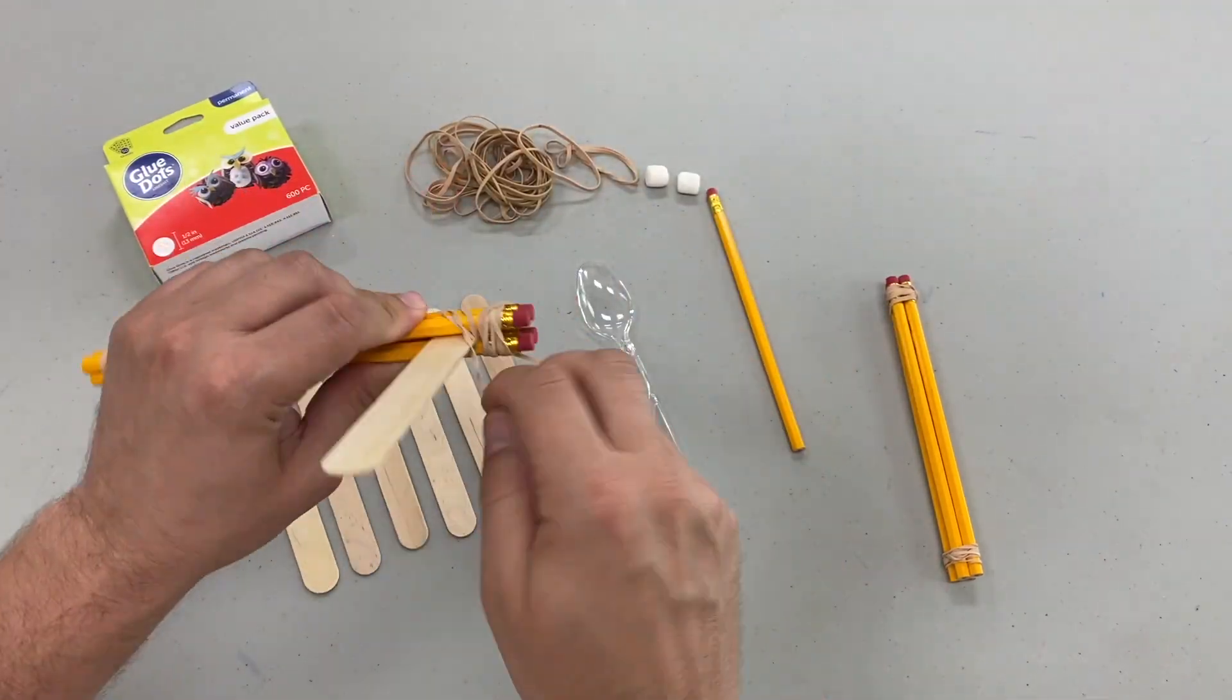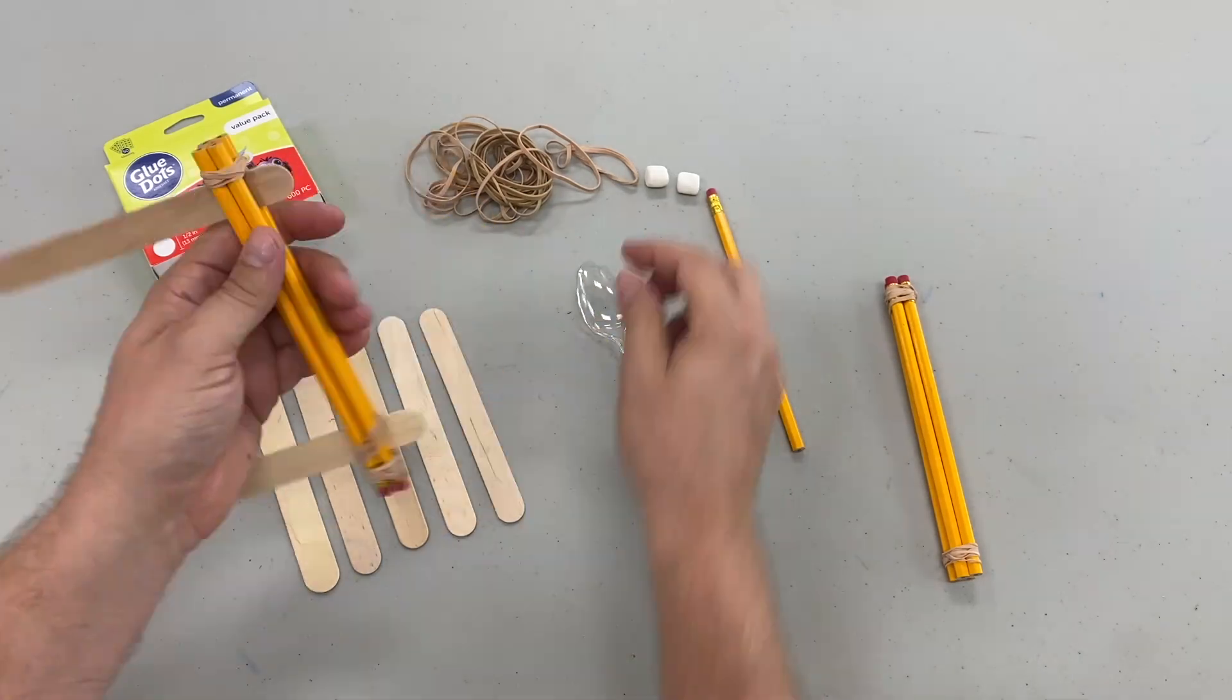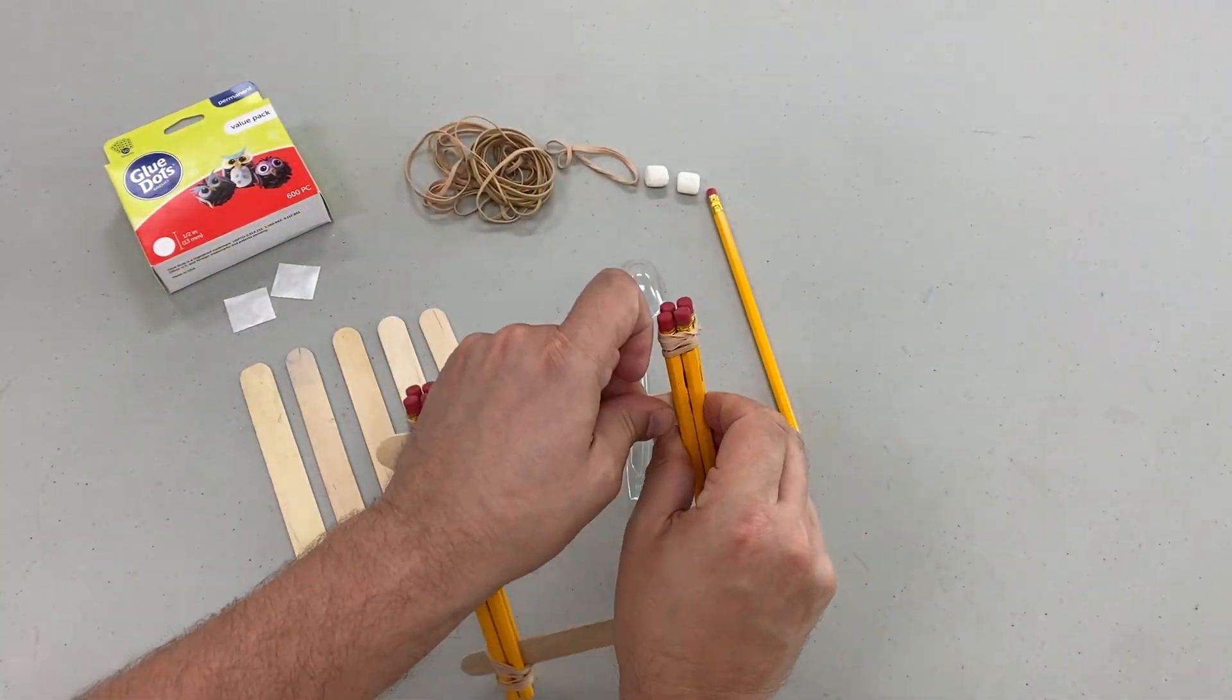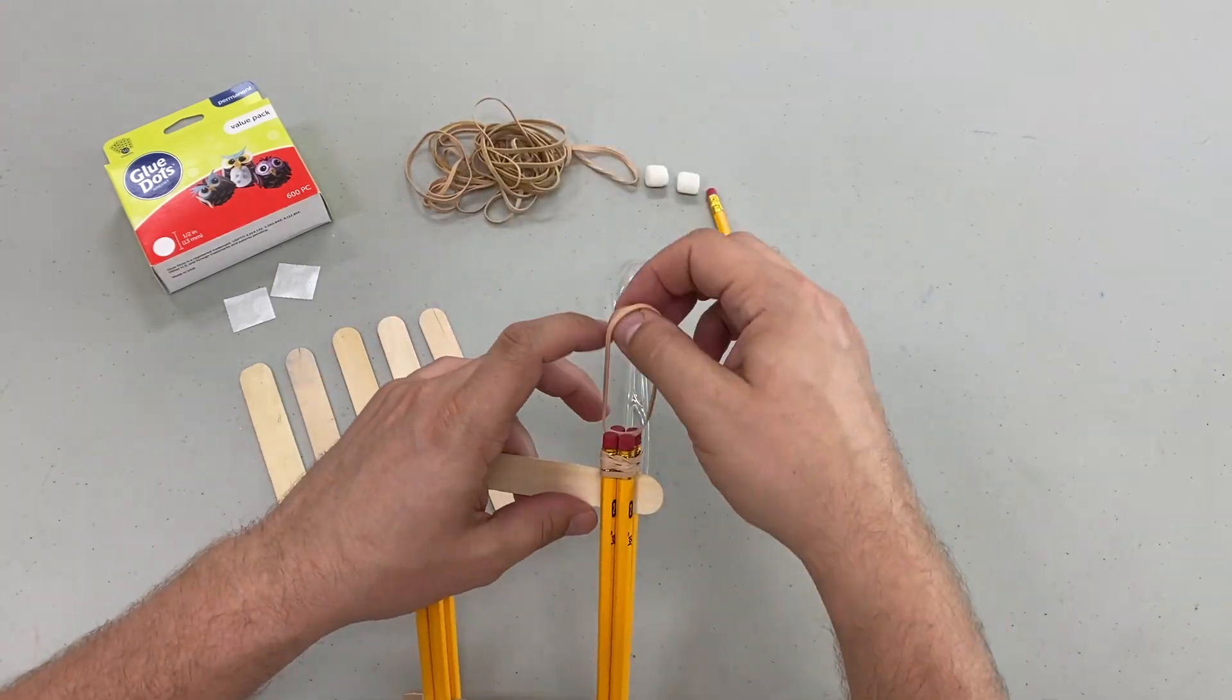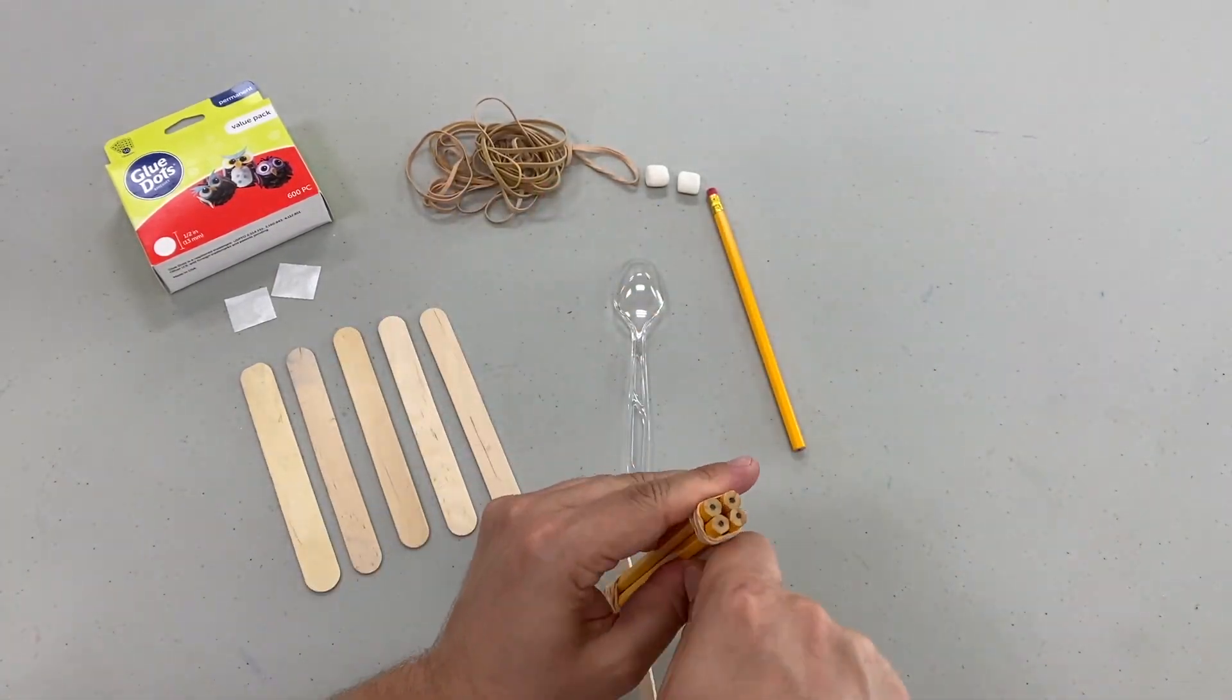Next, take your jumbo craft stick and work it in between your pencils. Repeat the process on the bottom as well. Secure each craft stick in the corner with a rubber band. You'll then attach this new C-shape into the other set of pencils, creating a rectangular raft shape that will make up the base of our catapult.